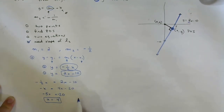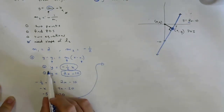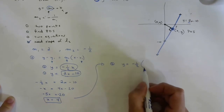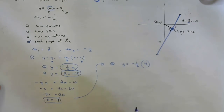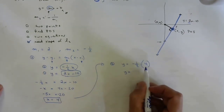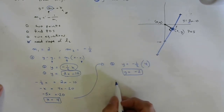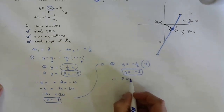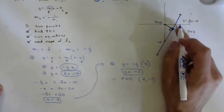Now substitute x = 4 into equation two: y = −½ × 4 = −2. Therefore the point of intersection is (4, −2). Adding that to the diagram, this is the second point needed for the distance formula.